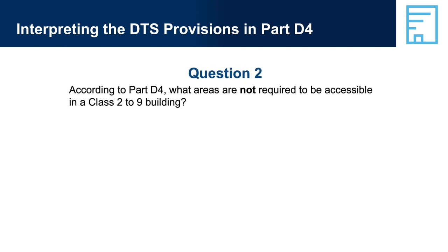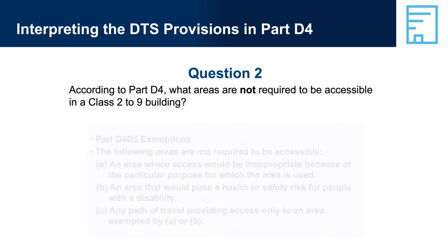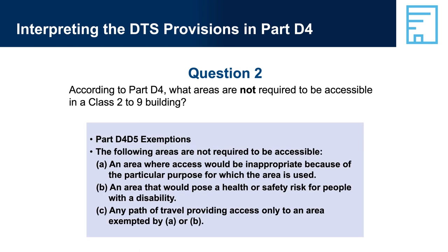Question 2: According to Part D4, what areas are not required to be accessible in a Class 2 to 9 building? Answer: Part D4-D5 Exemptions — the following areas are not required to be accessible: an area where access would be inappropriate because of the particular purpose for which the area is used.